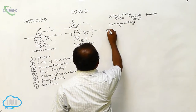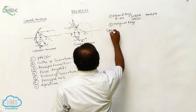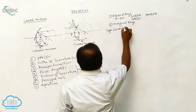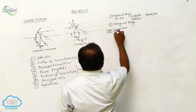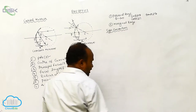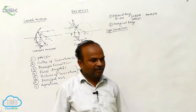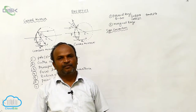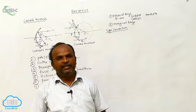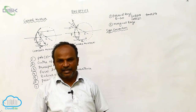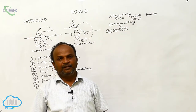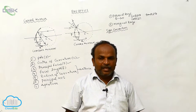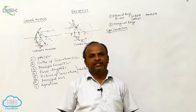What is the sign convention? In the case of mirrors, sometimes you can determine the distances, sometimes you can determine the object heights, image heights, sometimes magnification is there. Now, what is the sign convention in the case of mirrors?